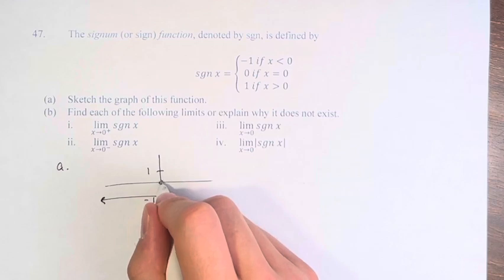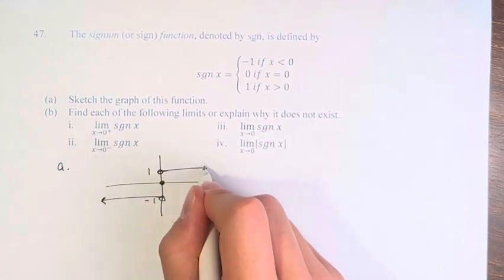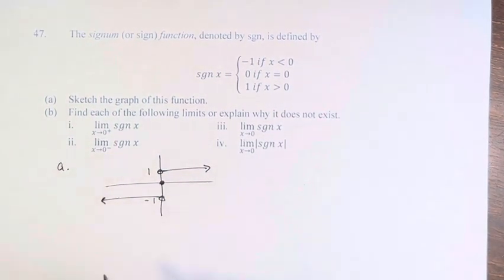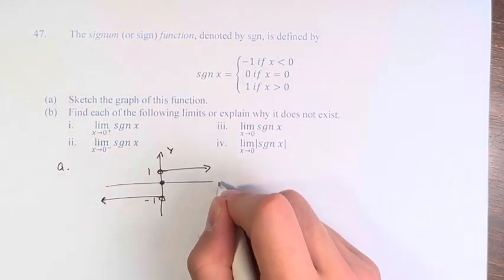At 0, it equals 0, and greater than 0, it's equal to 1. So that's just a simple graph of the function.